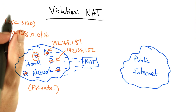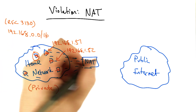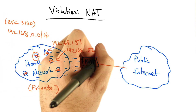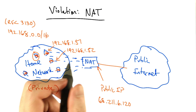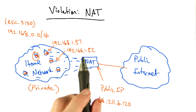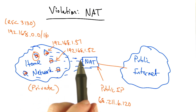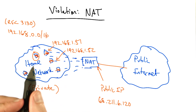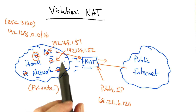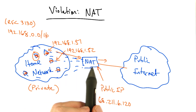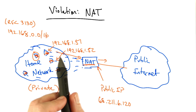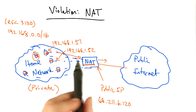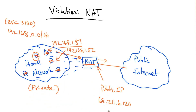Each one of these devices in the home gets its own private IP address. The public internet, on the other hand, sees a public IP address, which typically is the IP address provided by the internet service provider. When packets traverse the home router, which is often running a network address translation process, the source address of every packet is rewritten to the public IP address.